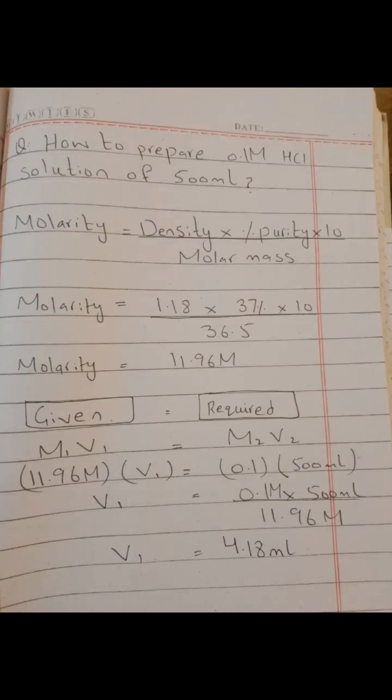To prepare a solution of 0.1 molarity of HCl, first you have to use the molarity formula: Molarity = (density × percentage purity × 10) / molar mass of HCl. By using the values for density and percentage purity from literature, you will input them here and calculate the molarity.